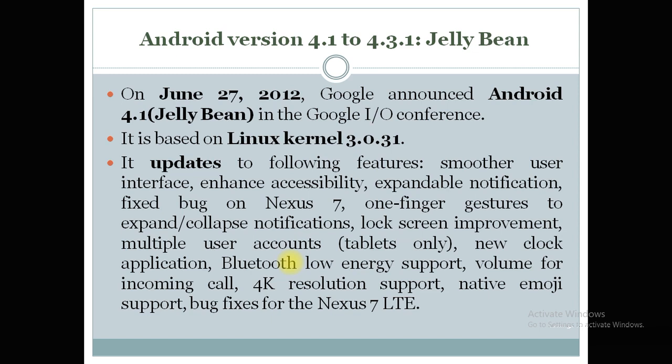Jelly Bean also adds Bluetooth Low Energy support, the ability to adjust the volume of incoming calls, 4K resolution support, and native emoji support. It also fixes bugs related to the Nexus 7, with Nexus 7 LTE being the improved version after clearing all bugs.